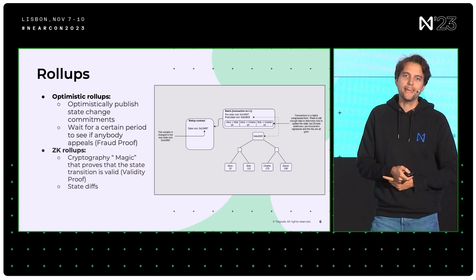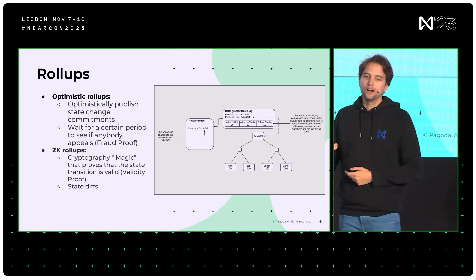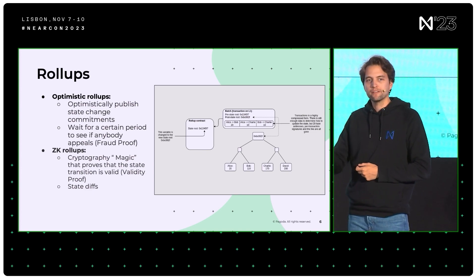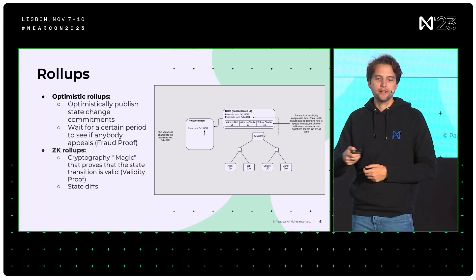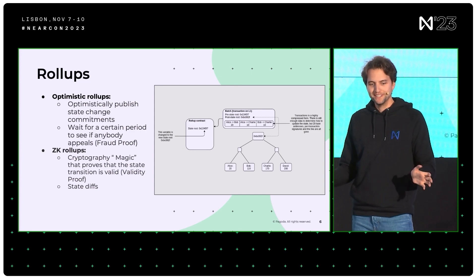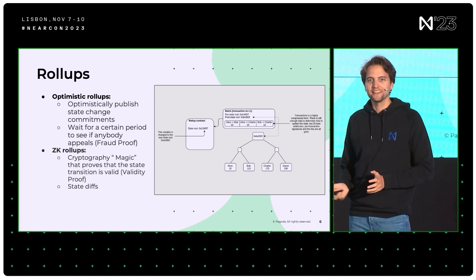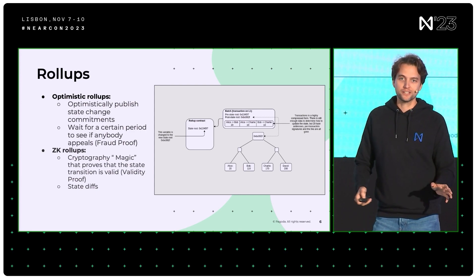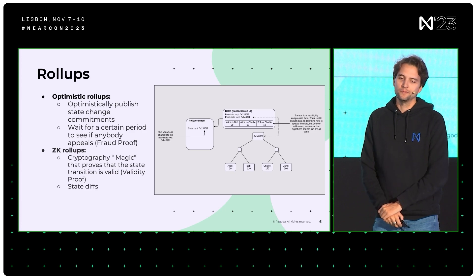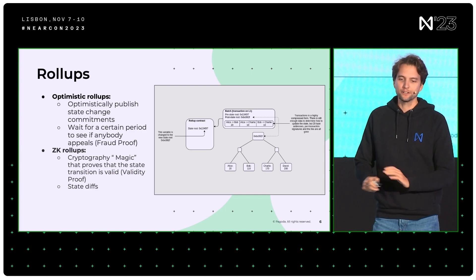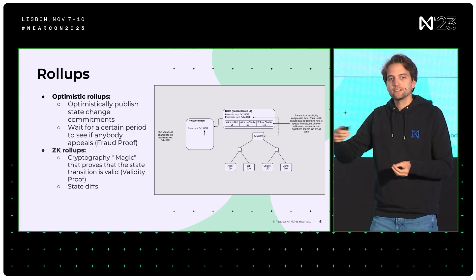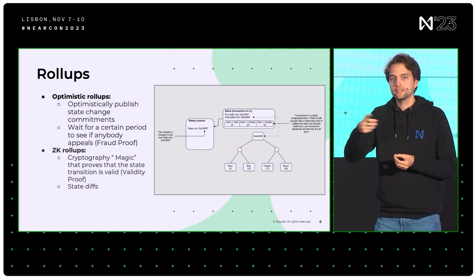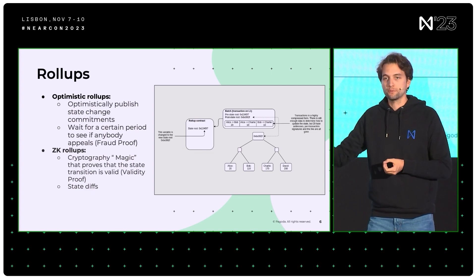For ZK, the proof is done on every execution and it is called a validity proof. I'm just going to call it cryptographic magic, but at the end of the day, every execution comes with a cryptographic proof that the execution was correctly done.